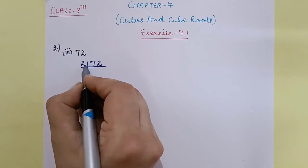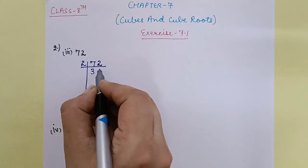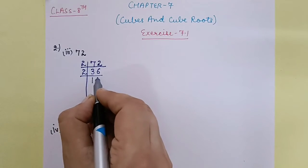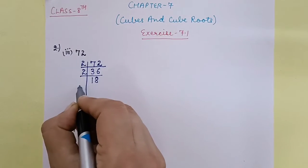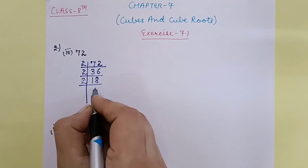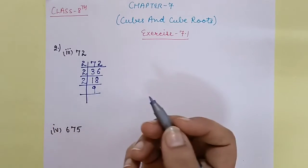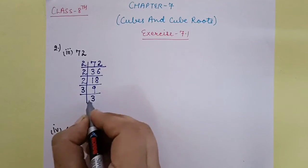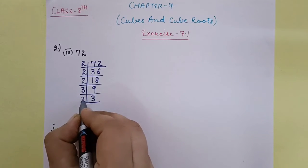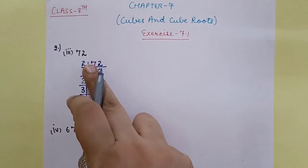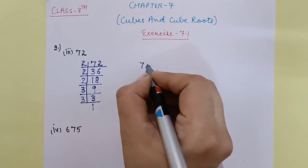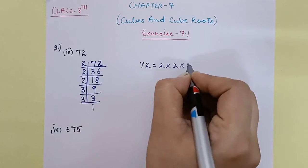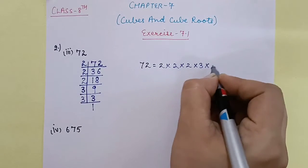Dividing 72 by 2: 72 ÷ 2 = 36, ÷ 2 = 18, ÷ 2 = 9. Now 9 comes, which goes in the table of 3: 9 ÷ 3 = 3, ÷ 3 = 1. So the factors of 72 are 2 × 2 × 2 × 3 × 3.